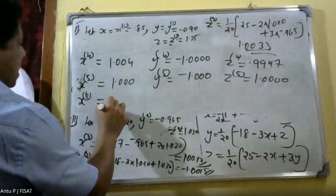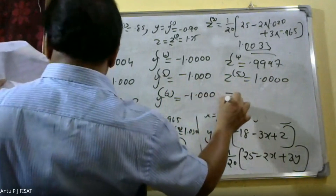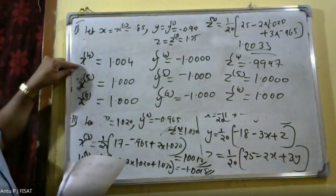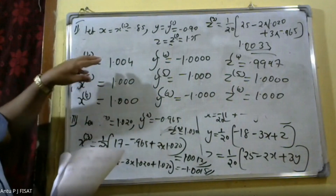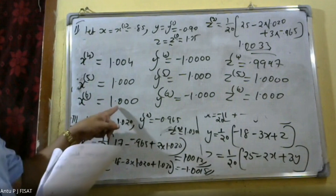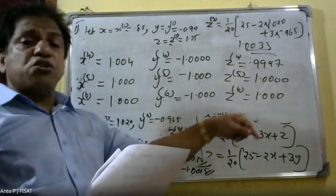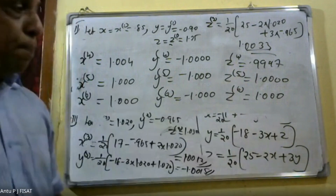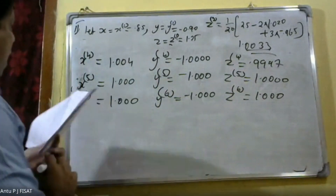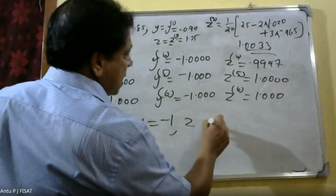In iteration 6: x raised to 6 = 1.00, y raised to 6 = -1.00, z raised to 6 = 1.00. We can see that the values from iteration 5 and iteration 6 coincide: x = 1, y = -1, z = 1. So the values have converged. The solution to this system of equations by Jacobi's iteration method is x = 1, y = -1, z = 1.